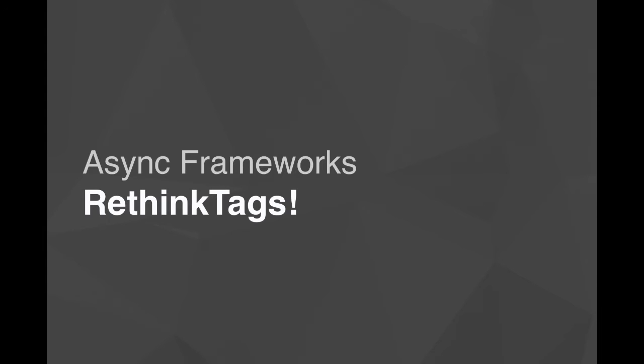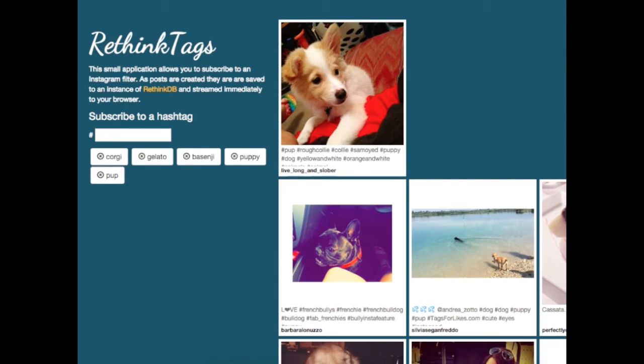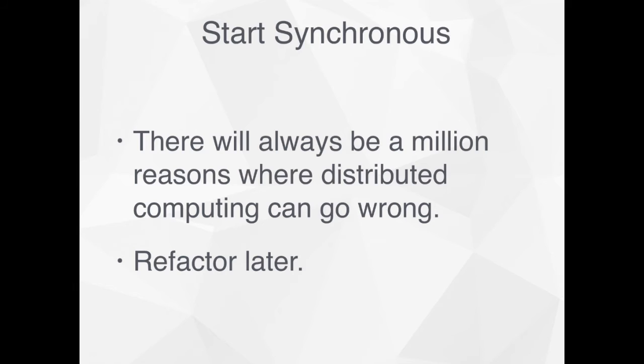To demonstrate what I'm talking about, I wrote my own Tornado app called RethinkTags, which allows people to go to a website and subscribe to different feeds of Instagram hashtags — I chose corgis, gelato, and puppies. They stream in real-time as people are Instagramming their lives all over the world. My suggestion if you're looking at Tornado: if you're strong in Python but want an asynchronous framework to build these kinds of things, Tornado is great — but first start synchronous, because when things go wrong asynchronously, the errors might not bubble up the way you're used to in a synchronous fashion.